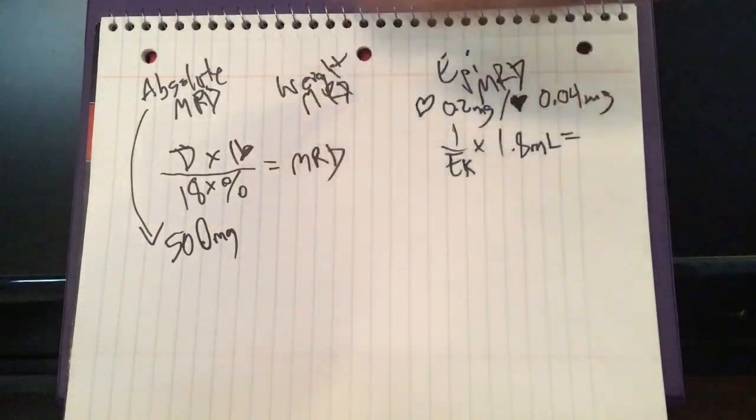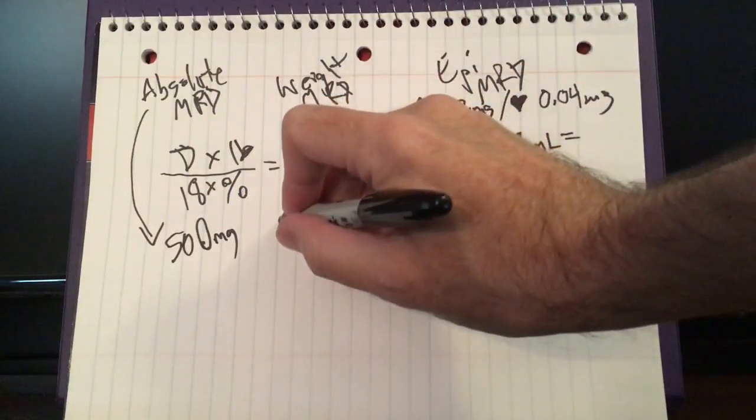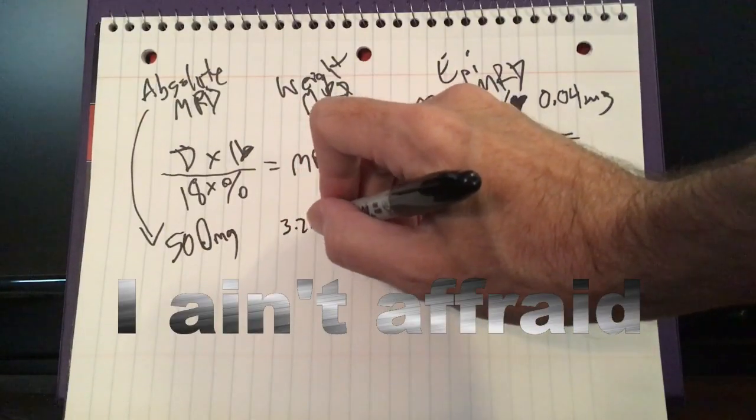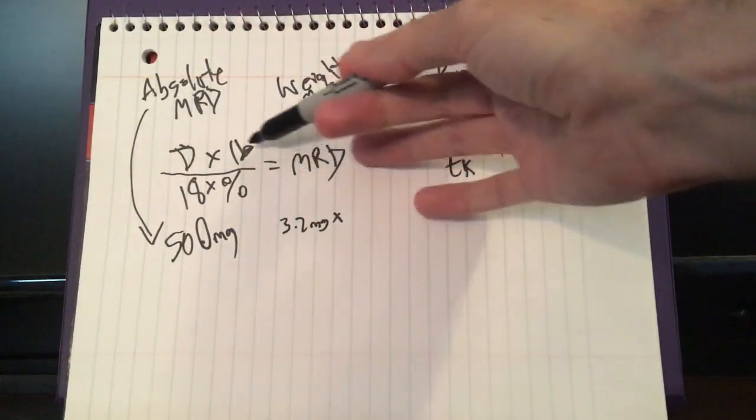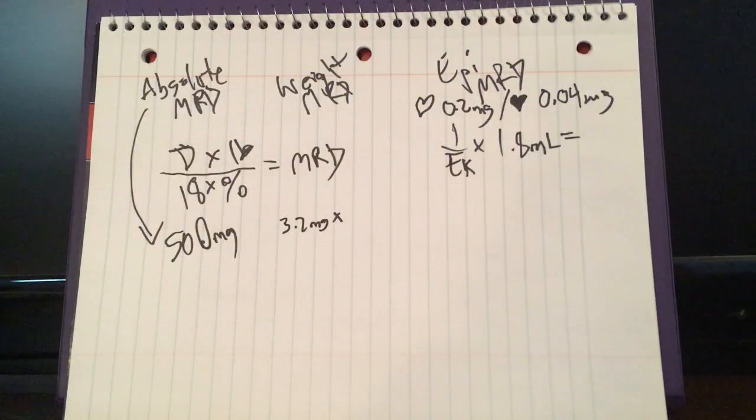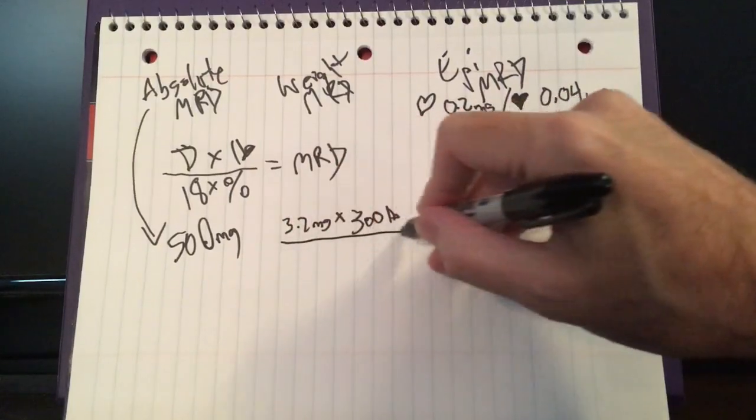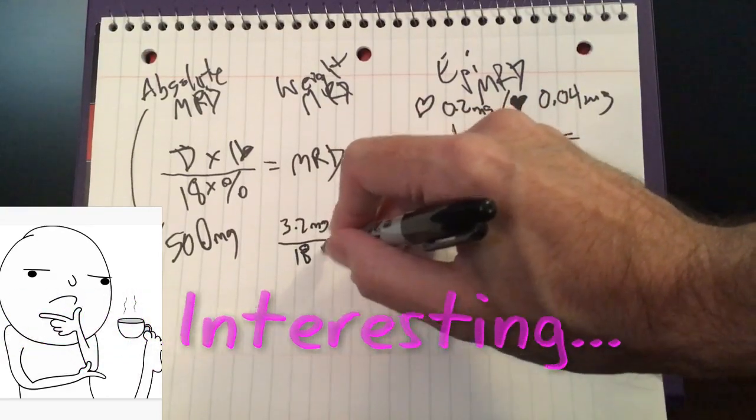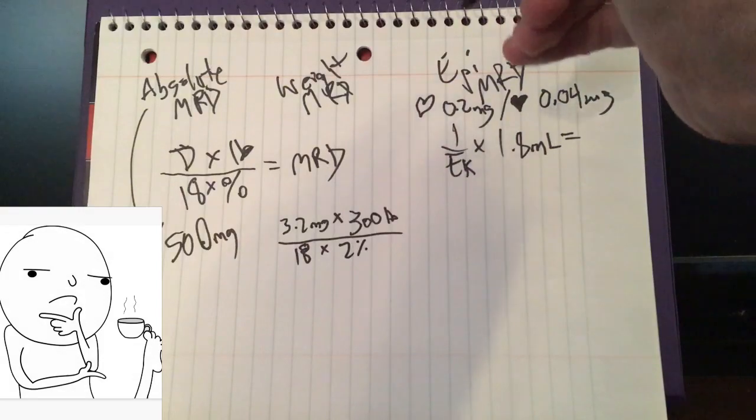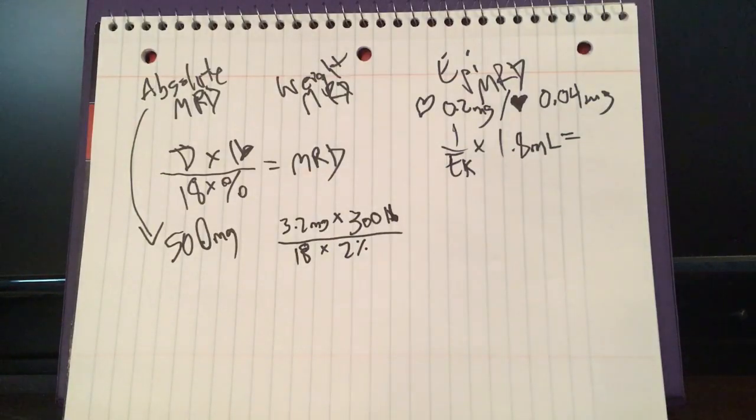So 500 is our absolute. To do by weight we're going to have to do our math over here. So let's take that 3.2 milligrams per pound and we're going to multiply it by however much our patient weighs. So let's say they weigh 100 - all right let's go big. Let's say they weigh 300 pounds. Why not? That'll make it interesting. So we put all this over 18 and we're using standard lidocaine 2 percent. My handwriting sucks. Okay so let's crunch these numbers real quick.